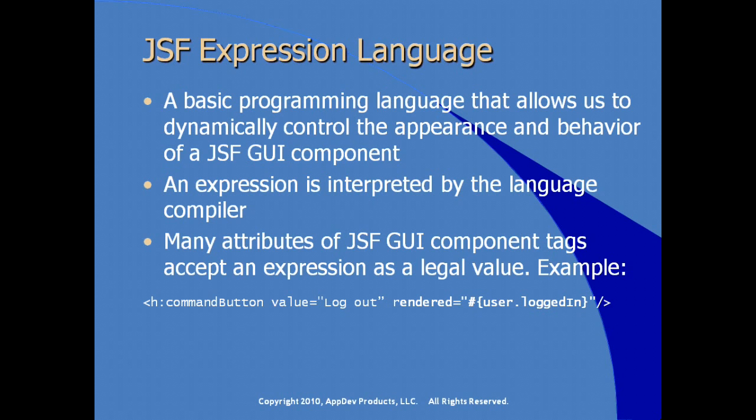For example, here we have a JSF command button with value 'logout'. We're using the rendered attribute with a bean instance called user, asking for a property called loggedIn. Assuming loggedIn returns a Boolean, the rendered attribute uses true or false to decide whether to render the button. If the user is logged in, the logout button renders; if loggedIn returns false, the rendered attribute hides the button. This uses the JSF expression with the pound sign and curly brackets as the value for that attribute.